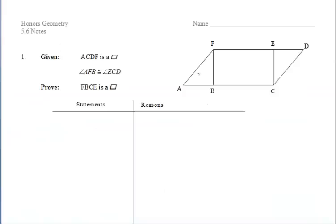Let's move on to the first example, which is a proof. We're given that ACDF is a parallelogram — that large figure — and that we have some congruent angles, which I'm marking with tick marks. In the end, we want to prove that the smaller figure inside, FBCE, is a parallelogram. So we're going from the big parallelogram to proving the smaller figure inside is also a parallelogram.